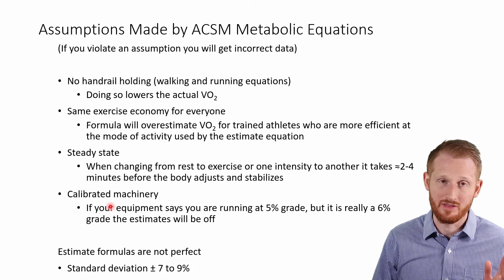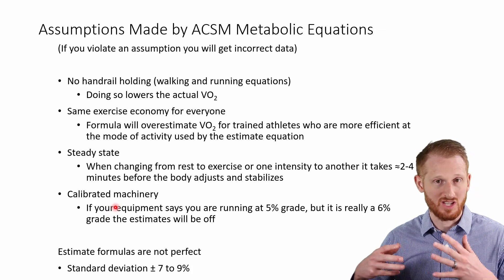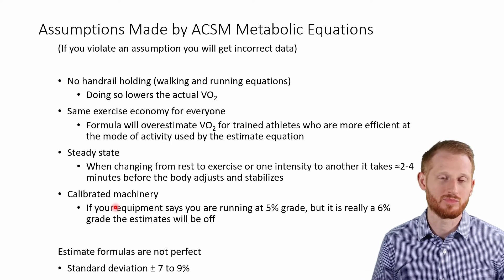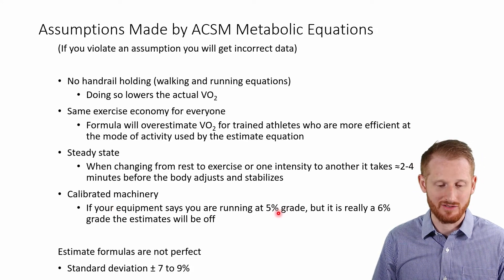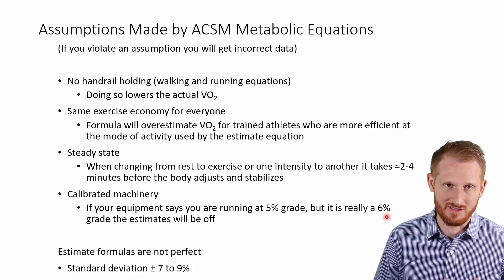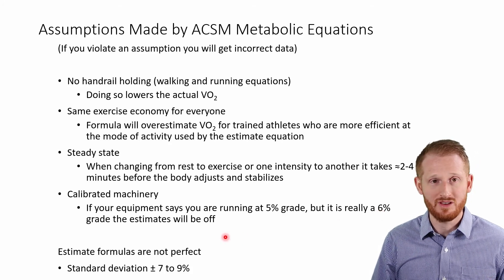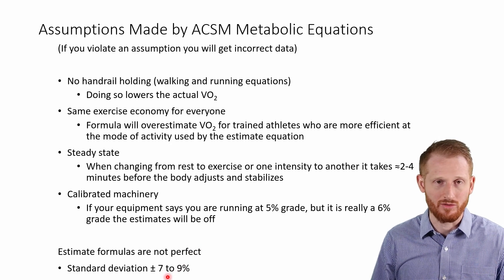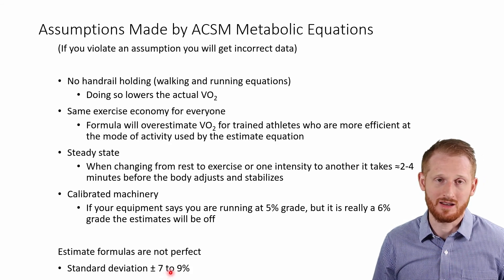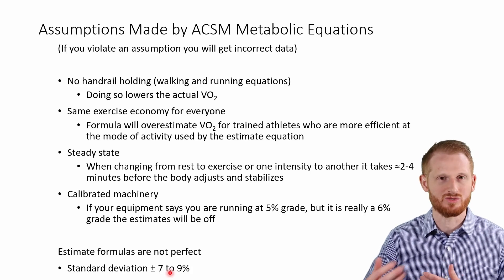The machine you're using — treadmill, bike, or otherwise — needs to be properly calibrated. If you set 10% grade but the machine is actually at 9% grade, that decreases the accuracy of the equations. And even if you do everything perfectly, these are still estimate-based equations with about a 7 to 9% standard deviation around the numbers. Keep that in mind when using these to prescribe exercise or calculate calories burned.